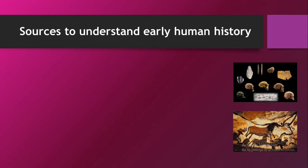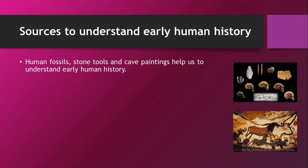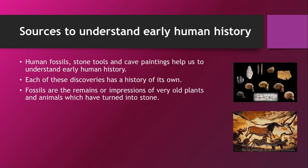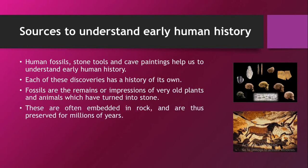Let us study early human history and the sources to study them. Fossils are the best things to study human history. Human fossils, stone tools and cave paintings help us to understand early human history. Each of these discoveries has a history of its own. Fossils are the remains or the impressions of very old plants and animals which have turned into stone. These are often embedded in rock and are thus preserved for millions of years.